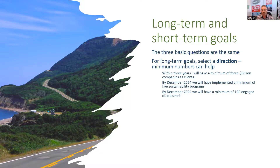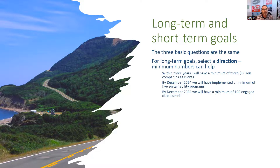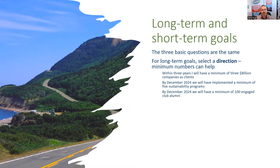By December 2024, we will have implemented a minimum of five sustainability programs. You're not saying specifically which programs they will be — just that there's going to be a minimum of five sustainability programs successfully implemented by December 2024. Another example might be: by December 2024, we will have a minimum of 100 engaged club alumni. Again, you're not saying where they came from or how long they've been involved — you're leaving it nice and broad, and you've got a clear direction.